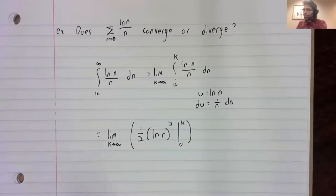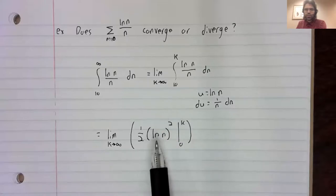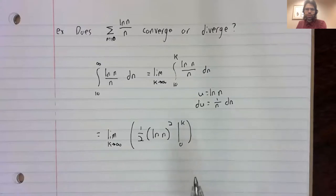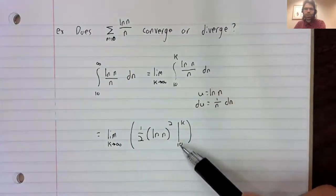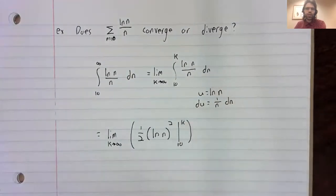So, we find the integral. We plug in zero and we, not zero, sorry. We plug in 10 and we plug in k.